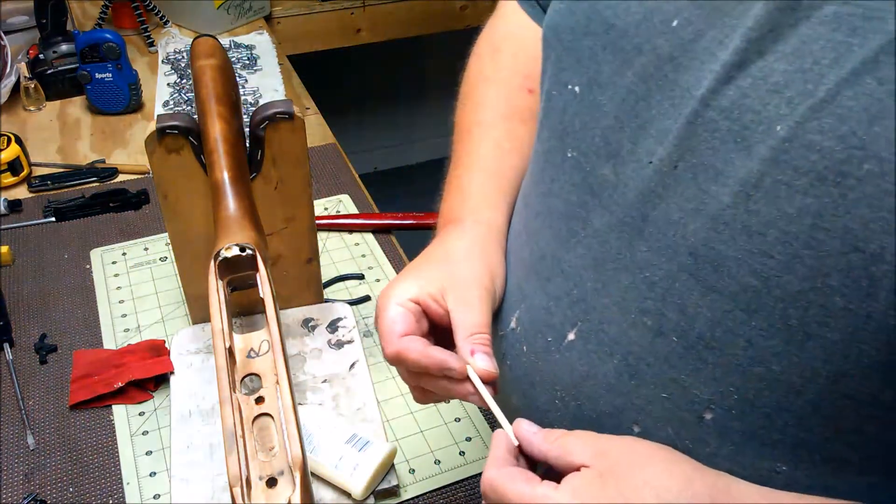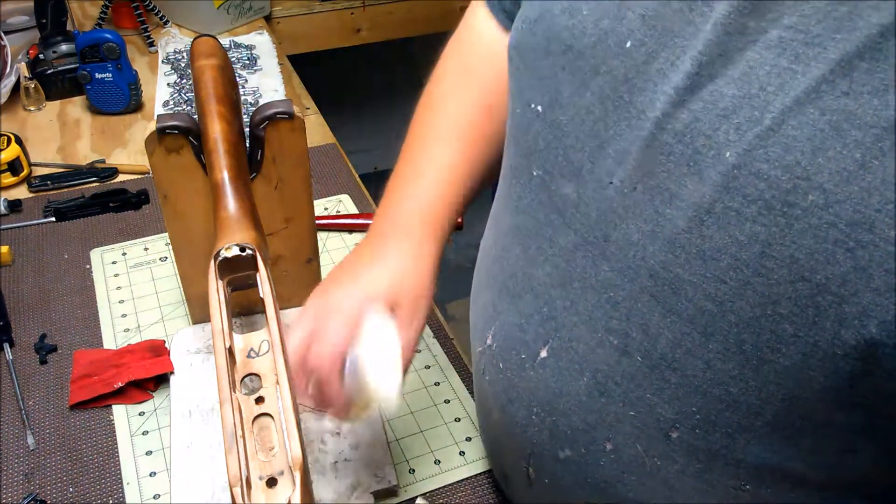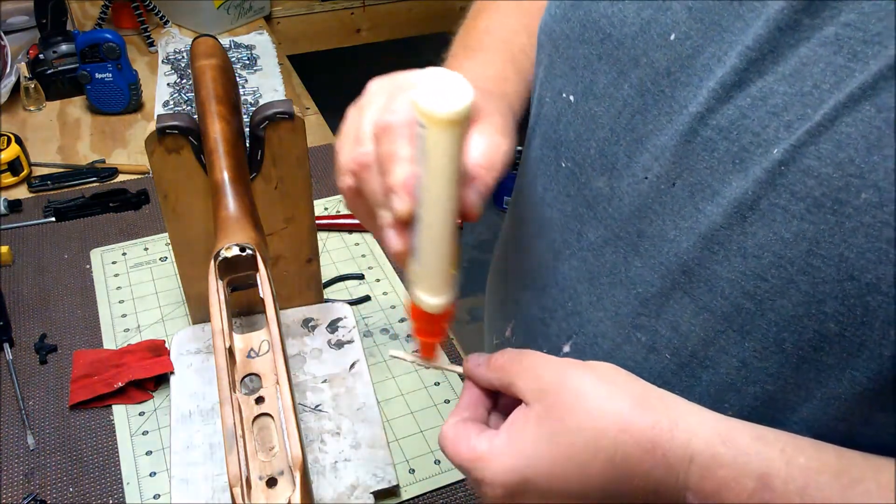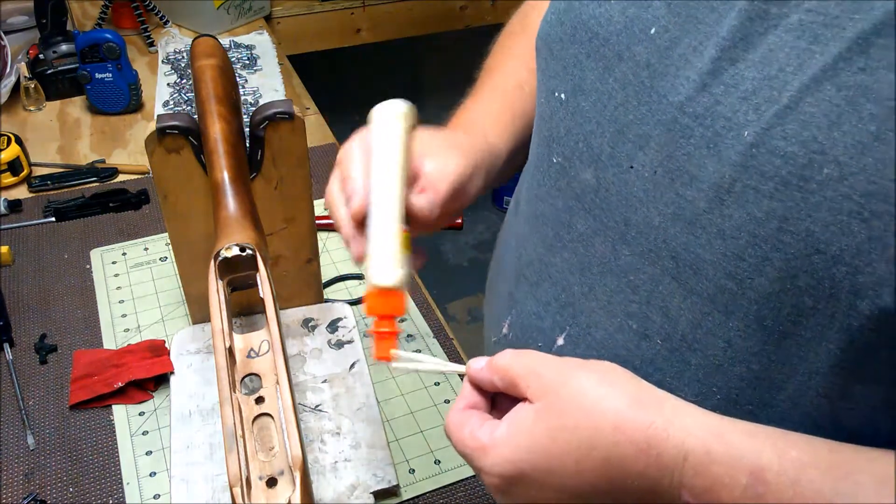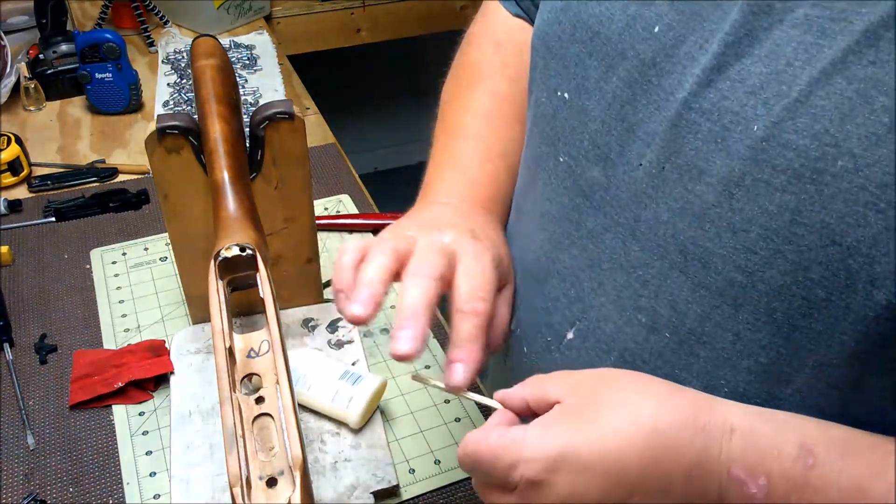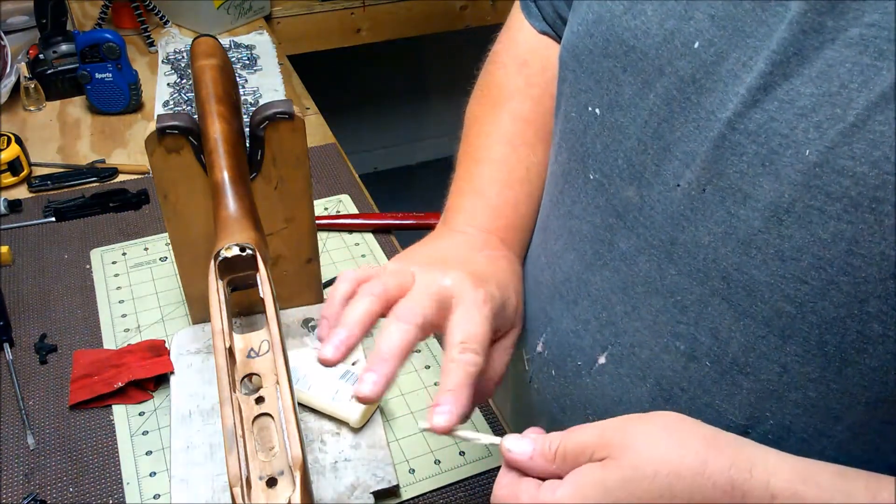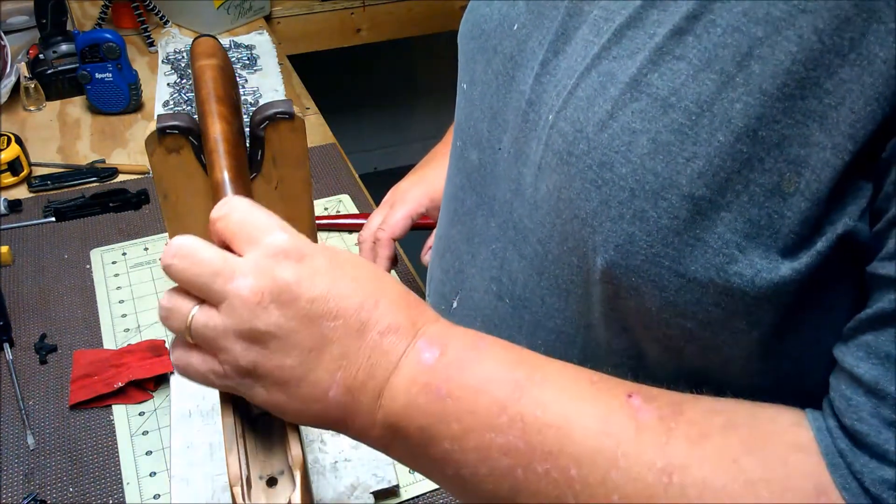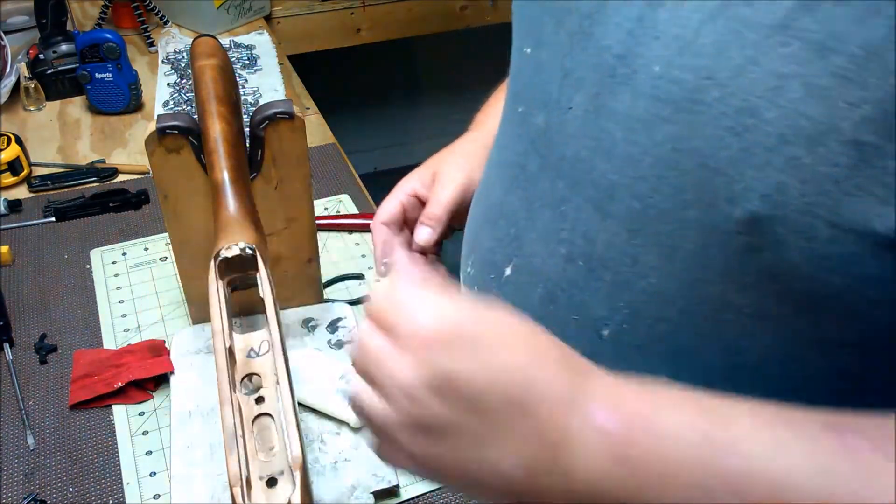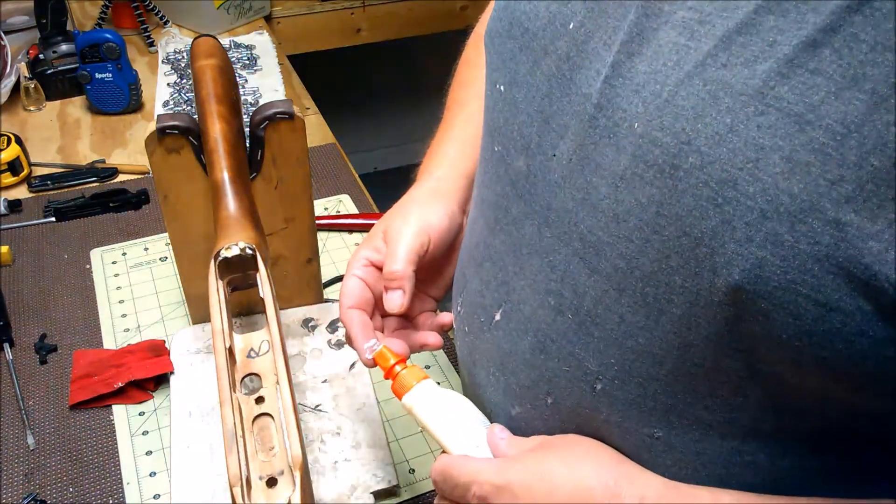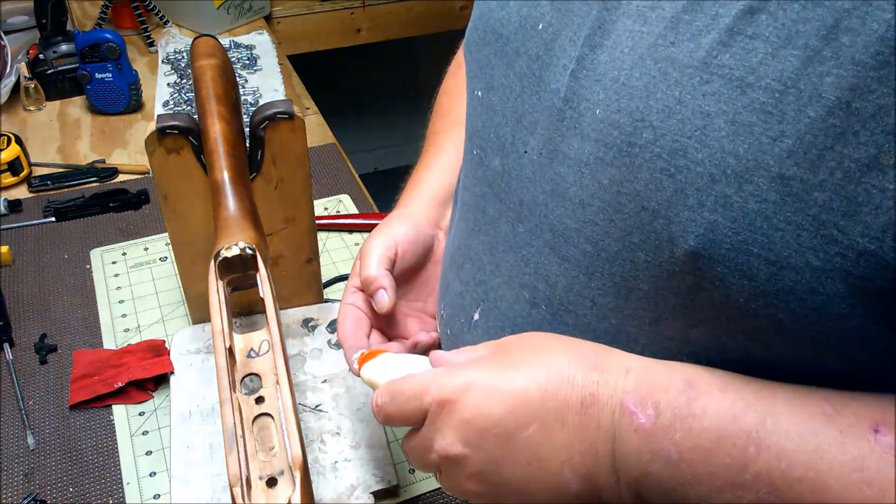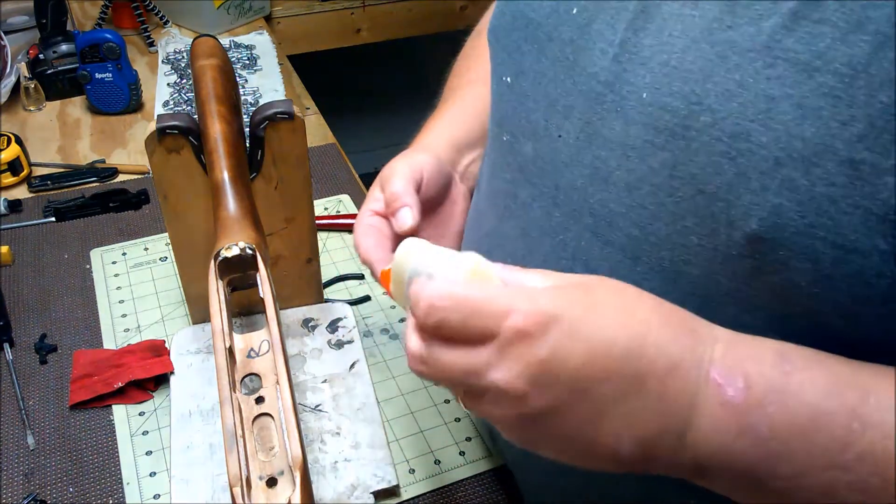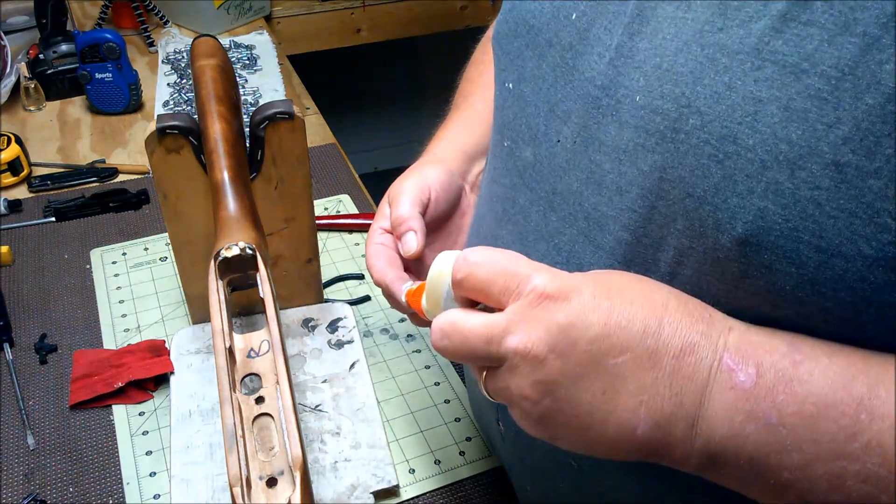So we'll do the same thing with the other dowel. Now it actually slid in there a little ways by itself, which is fine. The glue will take up any air space.